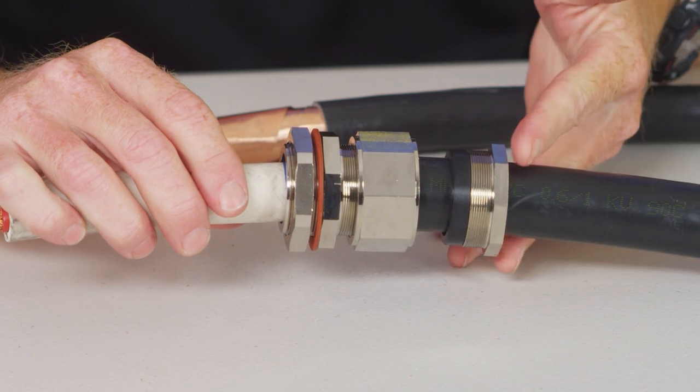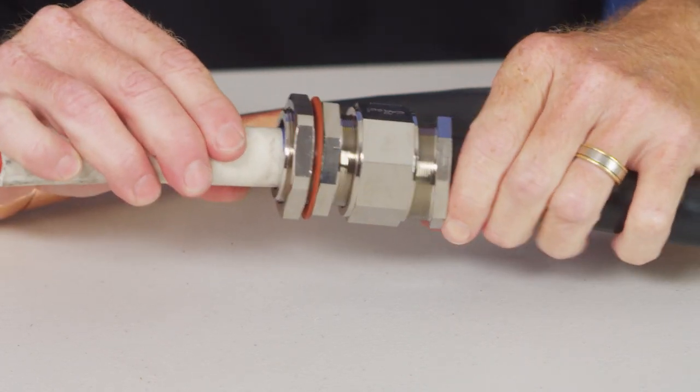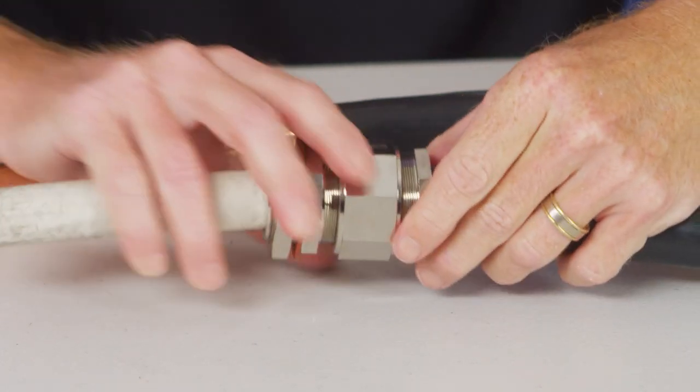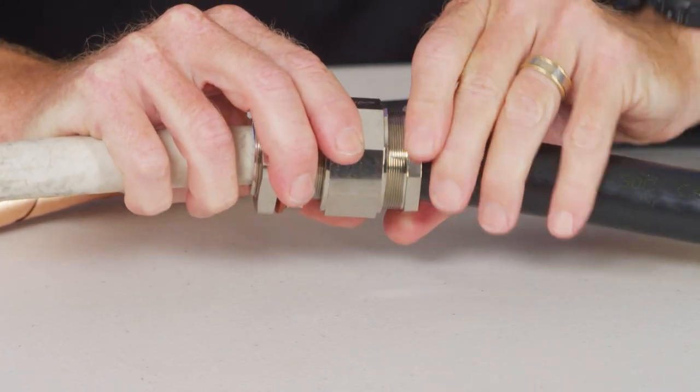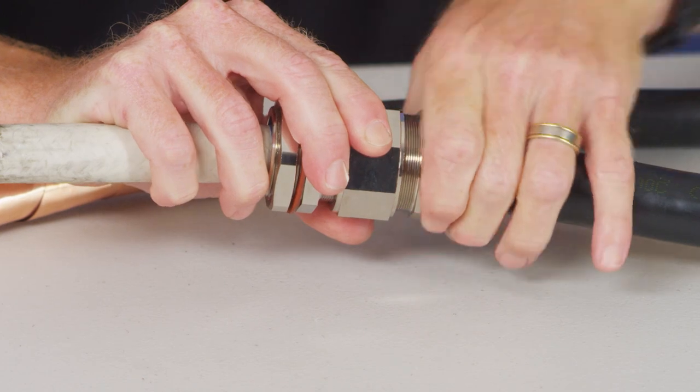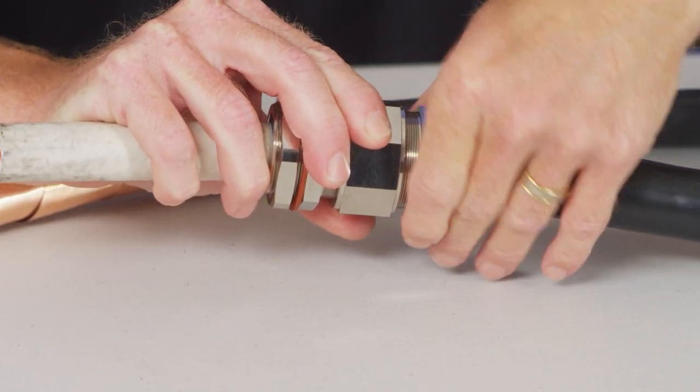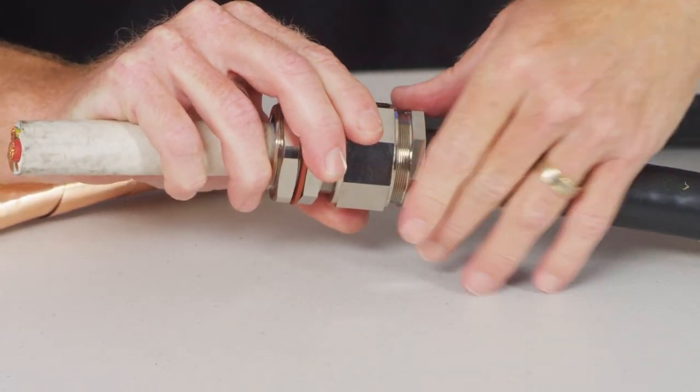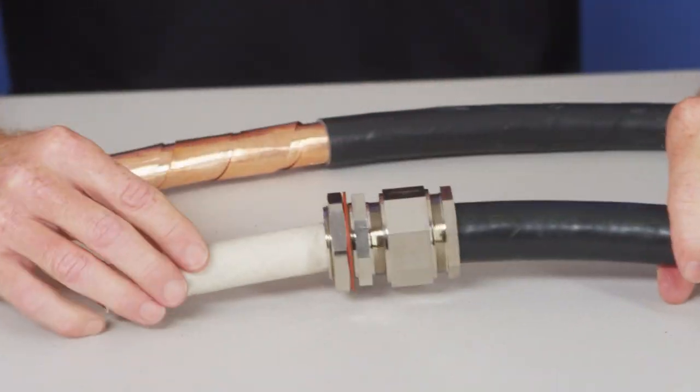And we do that up as tight. Then we bring the back lock nut up and we insert the seal into the back of the body and then we tighten that up making sure we get our IP rating at the back. And then you have the finished product.